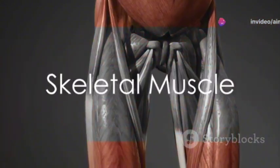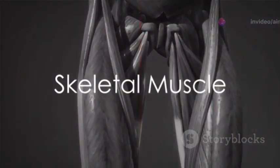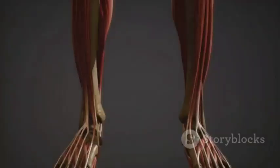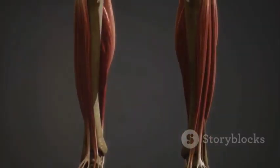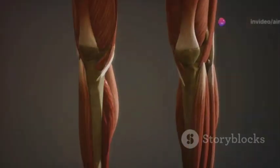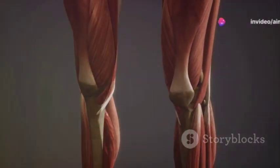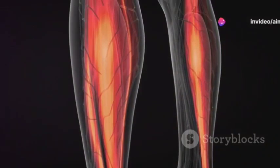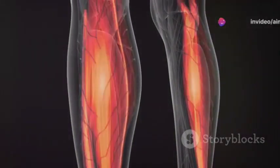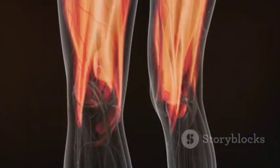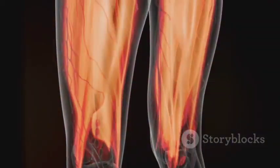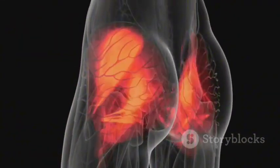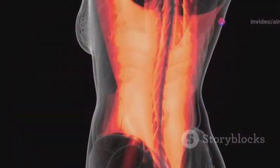Consider skeletal muscle, the most abundant type in our bodies. This type of muscle tissue, attached to our bones by tendons, enables us to perform voluntary movements. It's further divided into two subtypes: transversal and non-transversal skeletal muscle. Transversal skeletal muscle, often known as striated muscle due to its striped appearance under a microscope, operates under our conscious control.